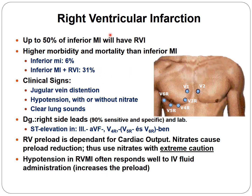Right ventricular infarction can still occur. Up to 50% of inferior MIs will also have right ventricular infarction. When right ventricular infarction co-occurs with inferior MI, the combined morbidity is about 31%, compared to approximately 6% for inferior MI alone.